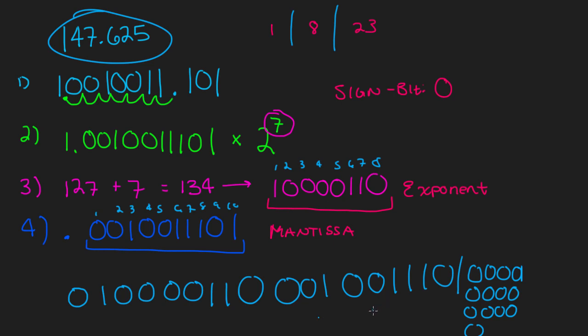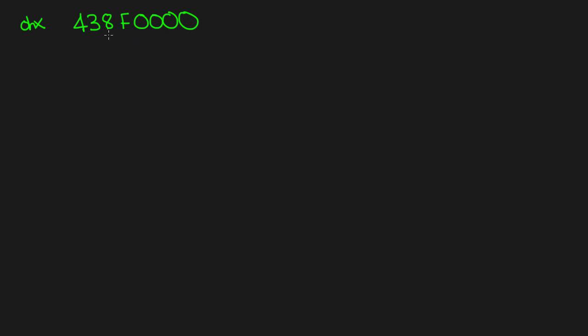Now we're going to do something a little different and go in reverse. We'll take a different number to change things up — it's going to be given to us in hex, which makes it a bit more complicated. The hex value we have is 438F0000.